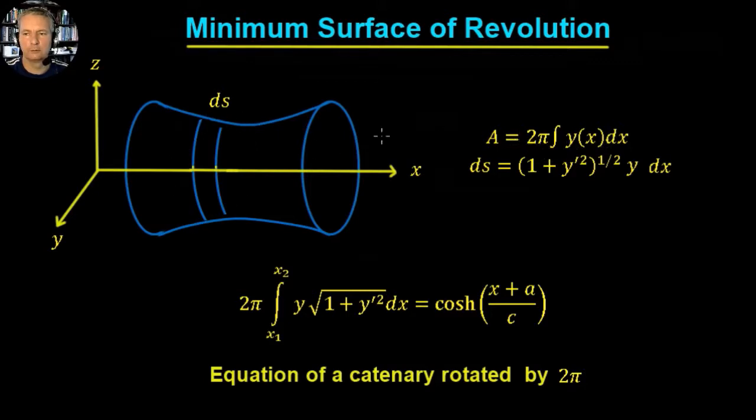Now we've seen whenever we looked at the catenary, we can say that the value ds is going to be given by 1 plus y' squared to the square root of a half times y. So really what we're going to do is we're going to do the same thing we did with the catenary, but the shape is going to be changing or the function is going to be changing by a factor of 2π.